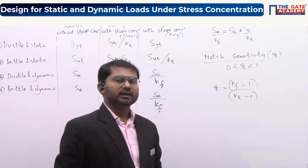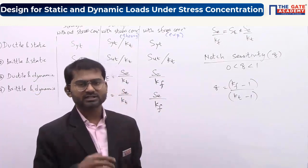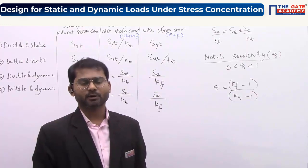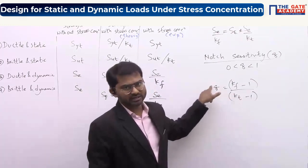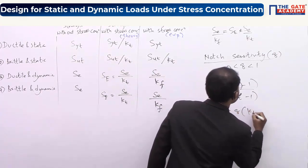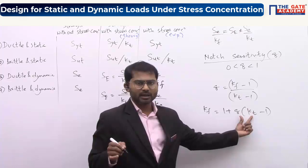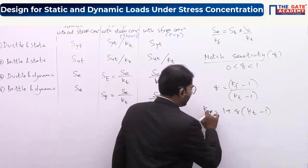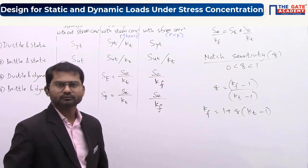Lesser the value of KF or KT, lesser is the effect of stress concentration, and lower is the probability of failure. We can also write KF = 1 + Q(KT − 1). Higher KT and higher Q give a higher KF value. So if both the geometric parameter KT and the material parameter Q are smaller, you automatically get a smaller KF — which is the desired objective for safer design.